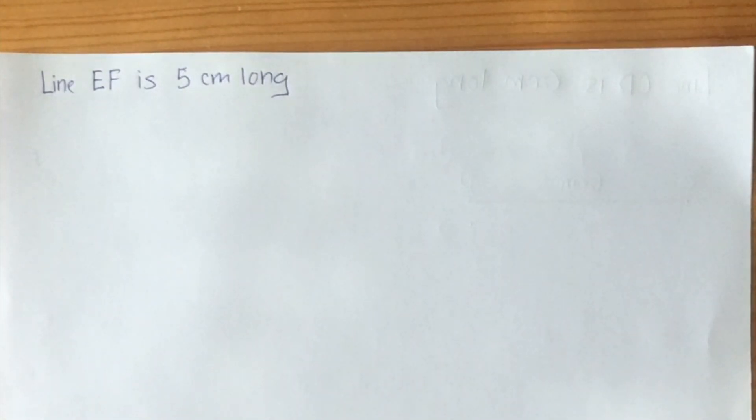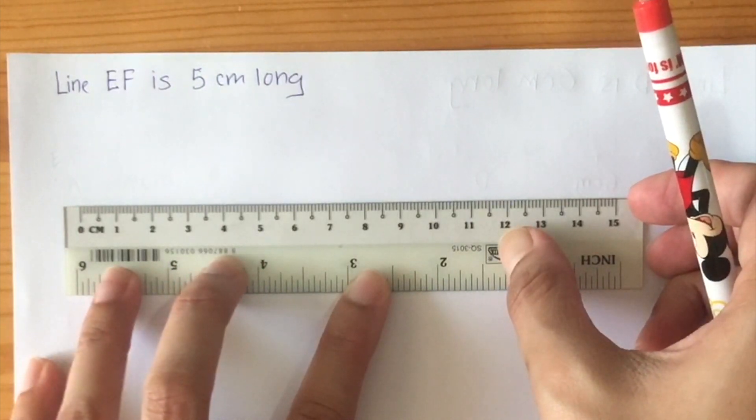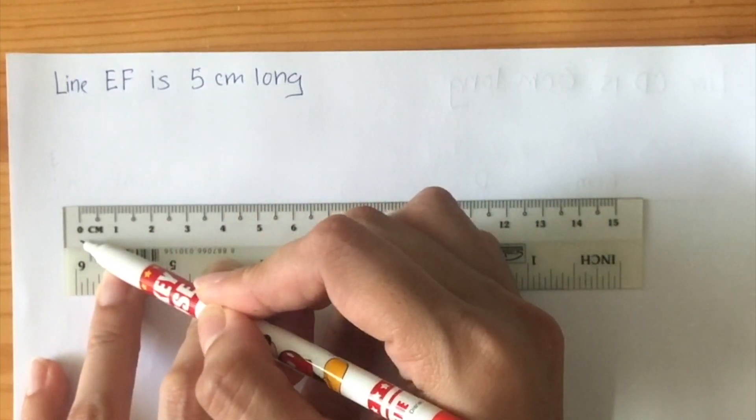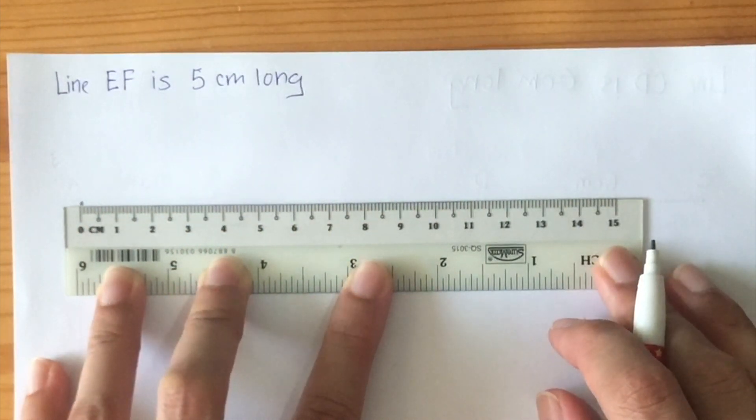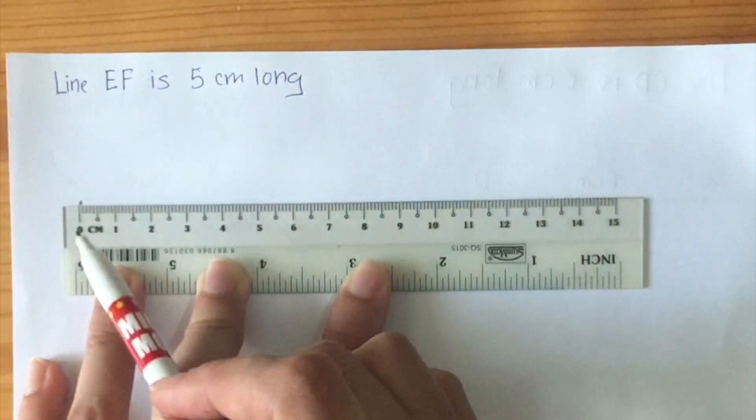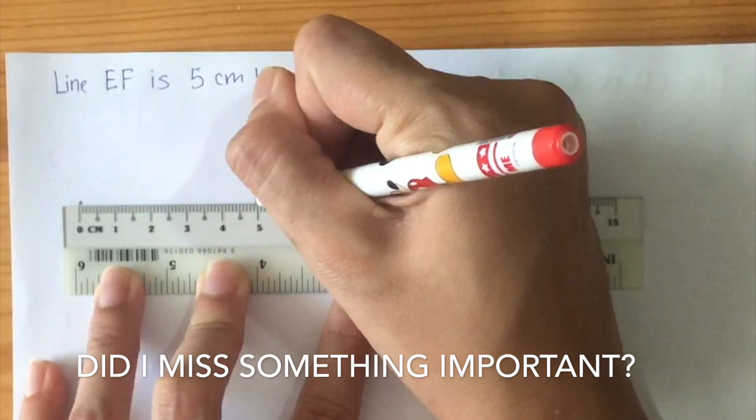Next we are going to draw line EF that is five centimeters long. Do you remember the four steps? Step one, we place the ruler firmly on the piece of paper. Step two, we look for the zero centimeter mark and make a small marking at the top on the piece of paper. Next we know that EF is five centimeters long, so we look for number five and we make a small marking above the number five.